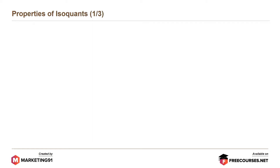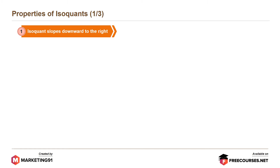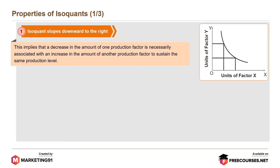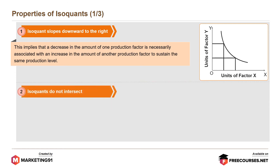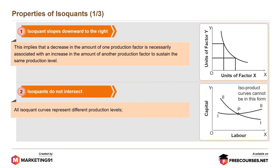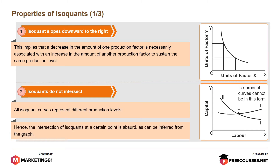Properties of isoquants. First, isoquant slopes downward to the right. This implies that a decrease in the amount of one production factor is necessarily associated with an increase in the amount of another production factor to sustain the same production level. Second, isoquants do not intersect. All isoquant curves represent different production levels; hence, the intersection of isoquants at a certain point is absurd as can be inferred from the graph.